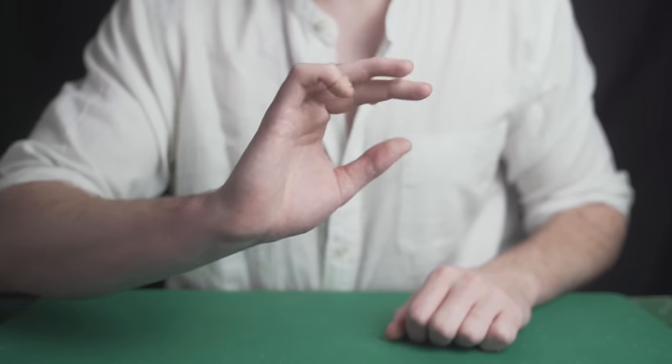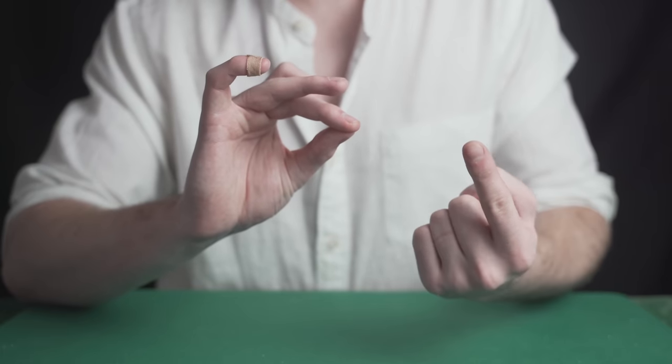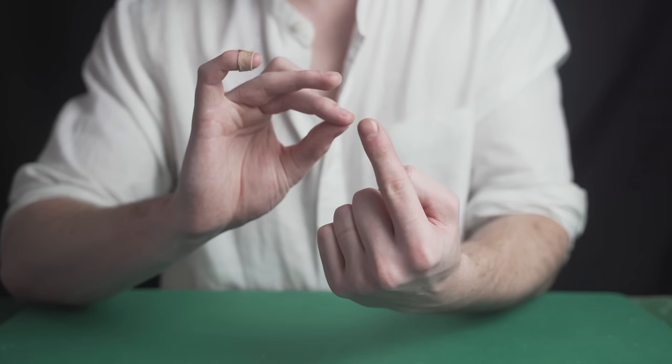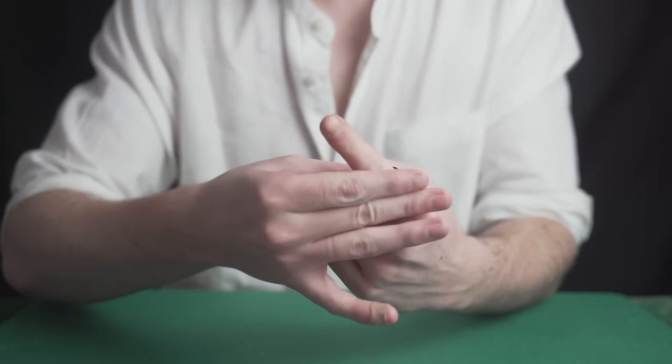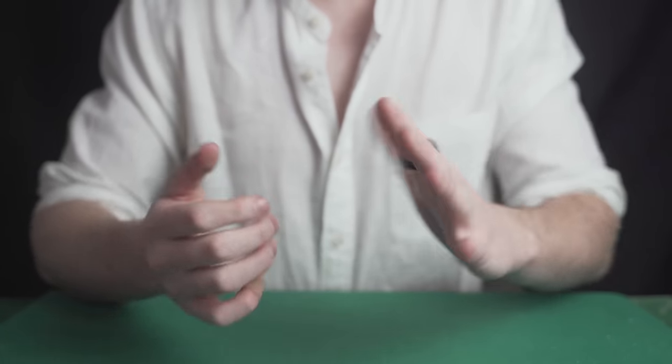The magician reaches into the air and grabs nothing. He then magically turns that nothing into a ring. You can literally do this with any ring so definitely learn this trick.